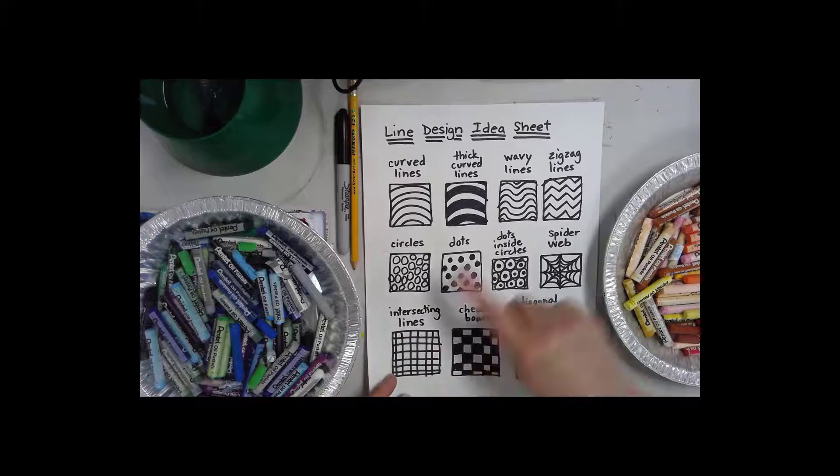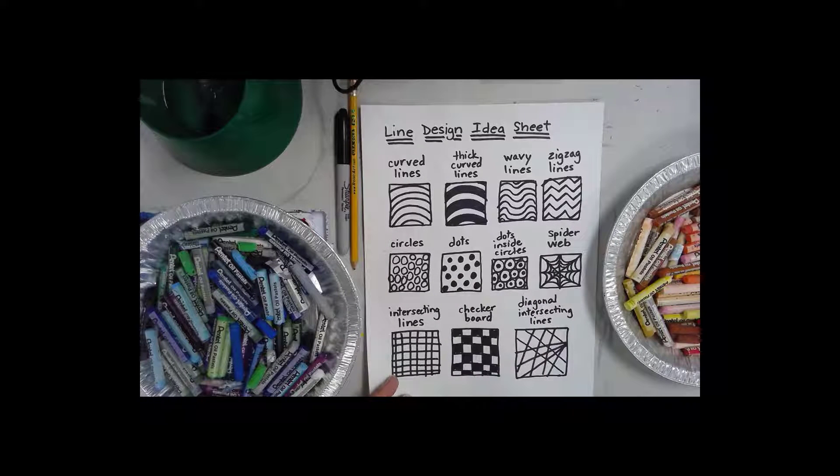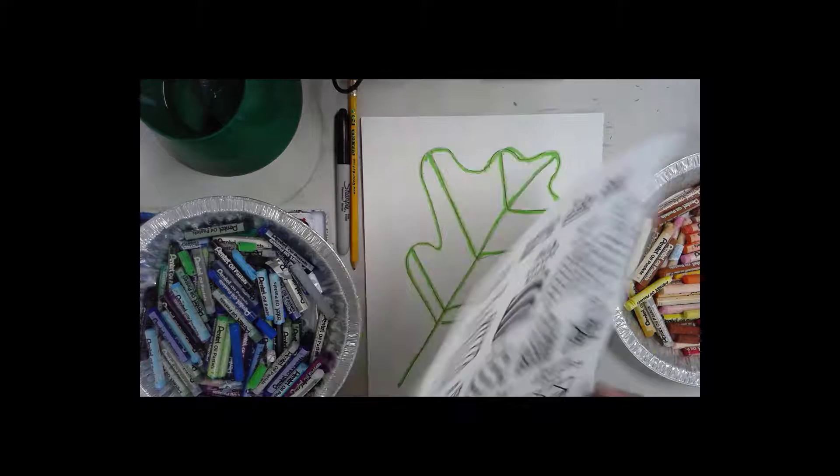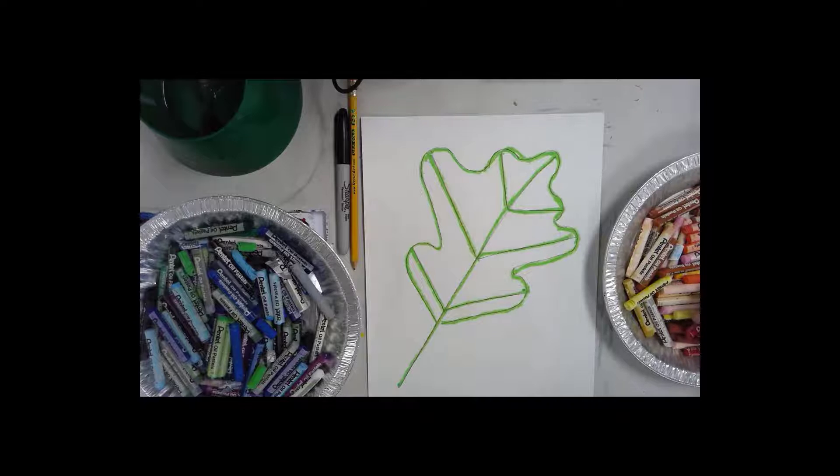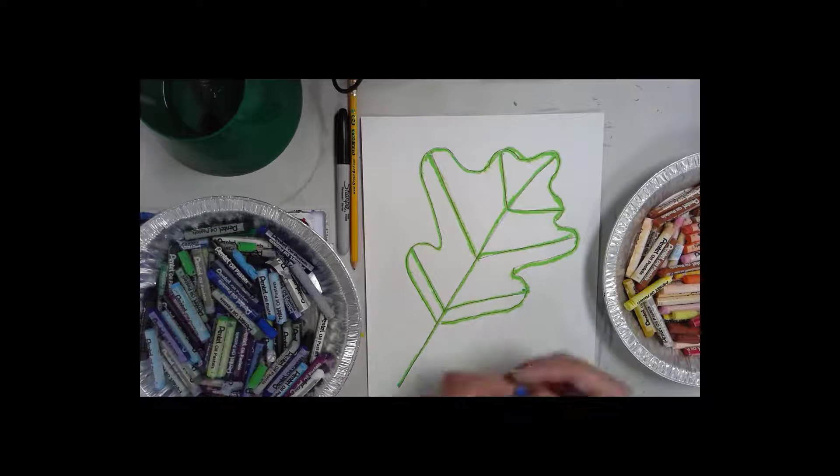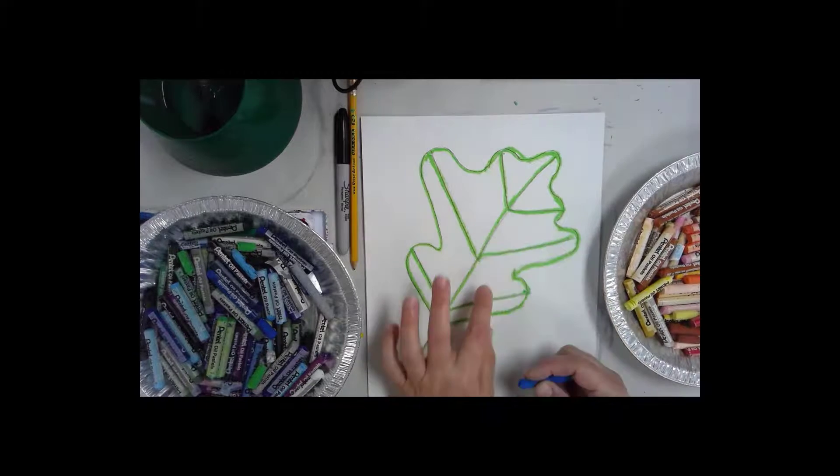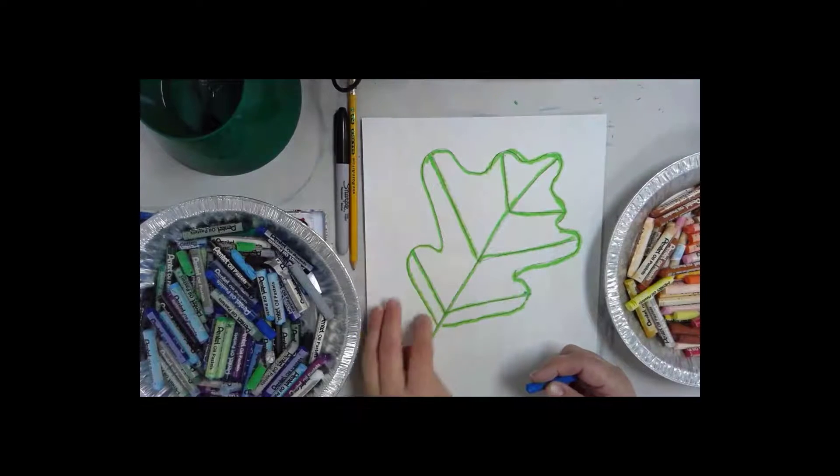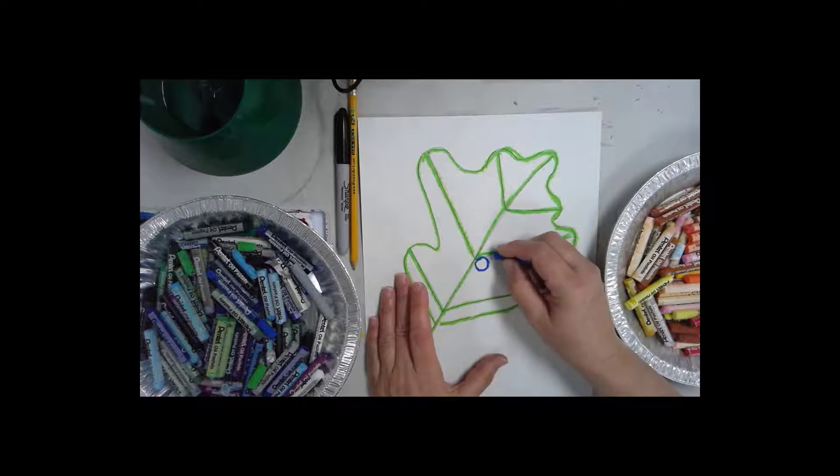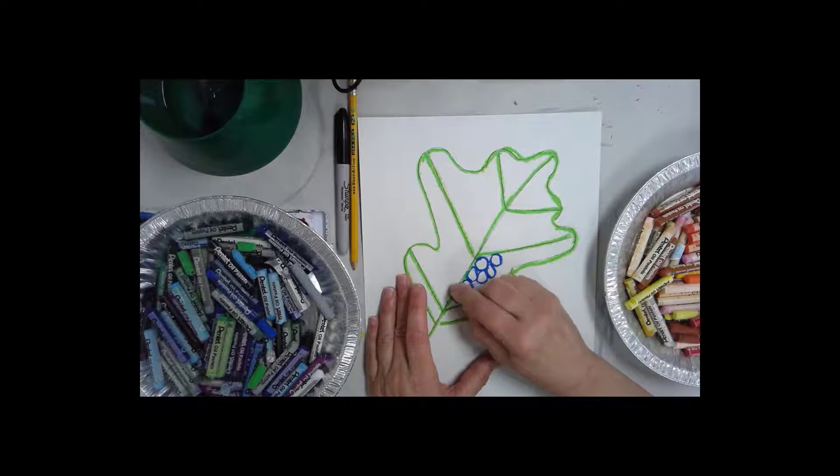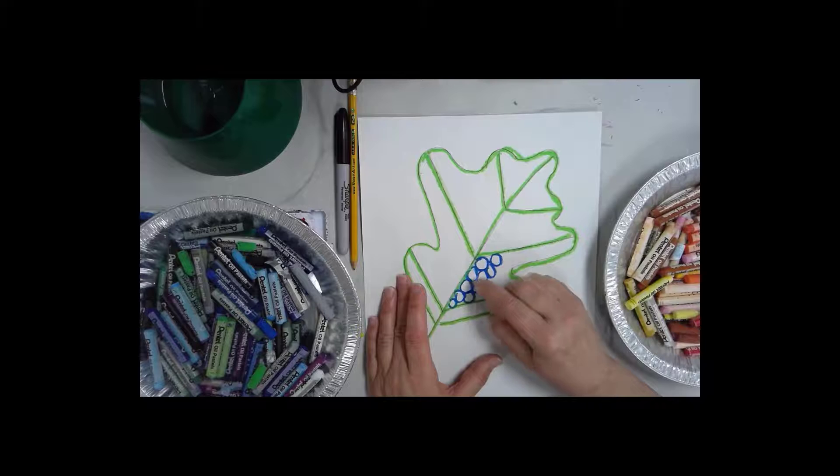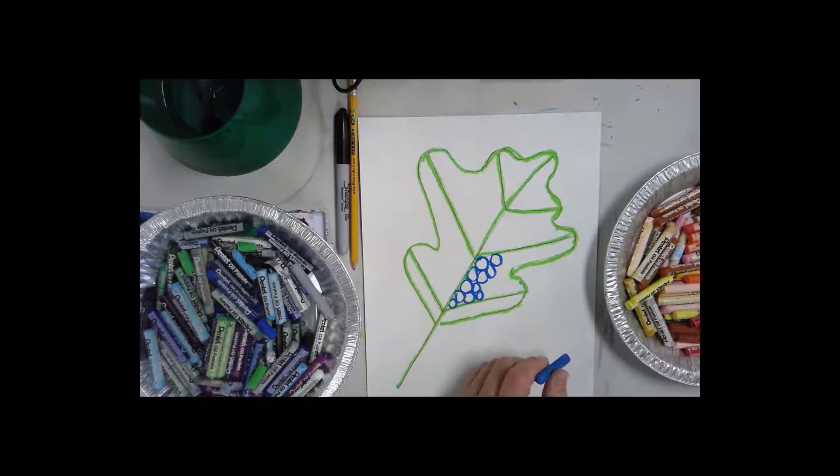Once you have all of your pencil lines traced then you're going to start with your line designs. Now Mrs. Walker has an idea sheet that you can look at or download if you're at home. You do not have to use any of these. These are just suggestions or ideas. If you can't think of any, hopefully you can come up with some of your own. Sometimes just looking at someone else's kind of inspires you. It doesn't matter what colors you use, but I'd like you to try and use a different color in each section and a different line design. I'm going to start with circles in this one and just fill it up with circles.